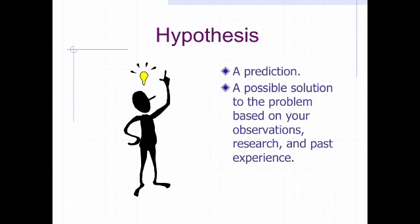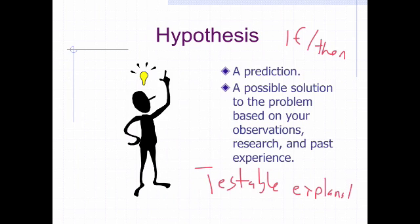A hypothesis is nothing more than a prediction. What we think is going to happen. We want to write these hypotheses using if-then statements. Like, if I do something, then I think something else will occur. It's basically a possible solution to the problem based on our observations, research, and past experience. It is also sometimes referred to as a testable explanation of what we see of what's going on. Remember, the key to a good hypothesis is the fact that it is testable. We have to be able to test it.